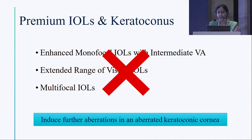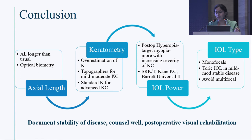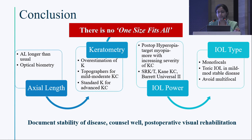To conclude: axial length is longer than usual — prefer optical biometry. Keratometry devices will overestimate; use topography devices and optical biometers for mild to moderate keratoconus, and standard K for advanced keratoconus. All IOL power formulas will produce postoperative hyperopia — target myopia, increasing with keratoconus severity. SRKT, Barrett Universal 2, and the Kane keratoconus formula have all been found fairly reliable. For IOL type: go monofocal; toric IOL is acceptable in mild to moderate stable disease; avoid multifocal. Document disease stability, counsel thoroughly including for postoperative visual rehabilitation, and remember there is no one-size-fits-all — customize per patient.